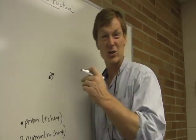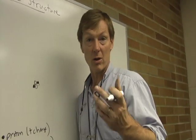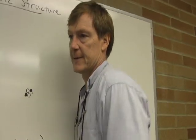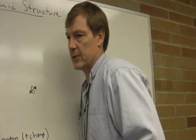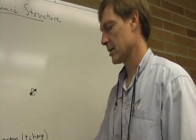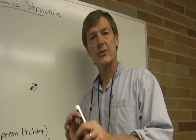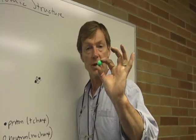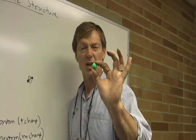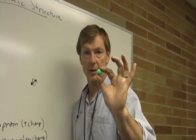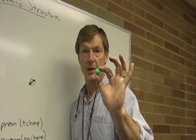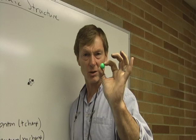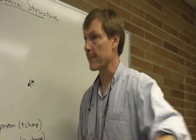This nucleus is so much smaller than the atom. So if this was the nucleus of an atom, the nearest electron would be a kilometer away. So the nucleus is a very tight kernel as it relates to the entire atom.